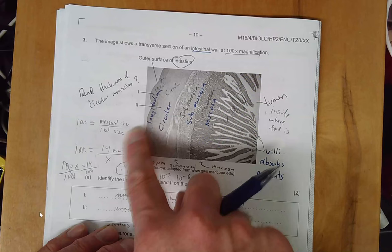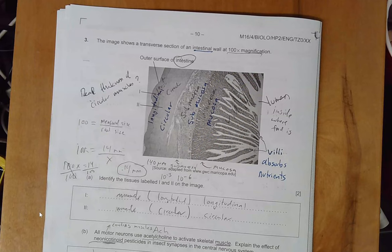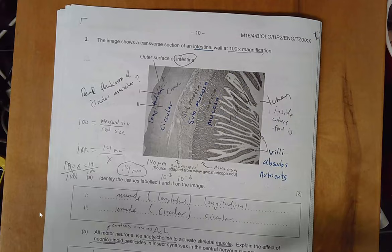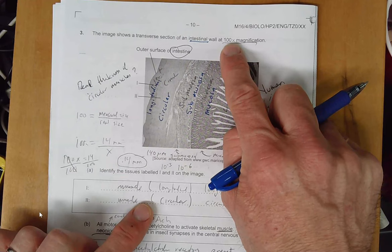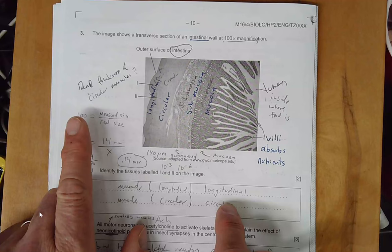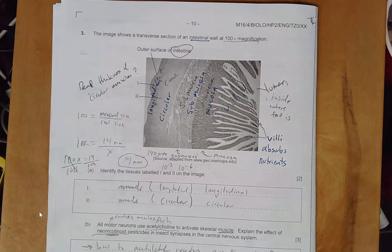Through your small intestine. In case they might ask you to do a magnification or a calculation of a magnification, I want to show you how they might do that. It shows you up here it's 100X. Remember the equation for magnification is magnification equals the measured size over the real size. If you took a ruler...